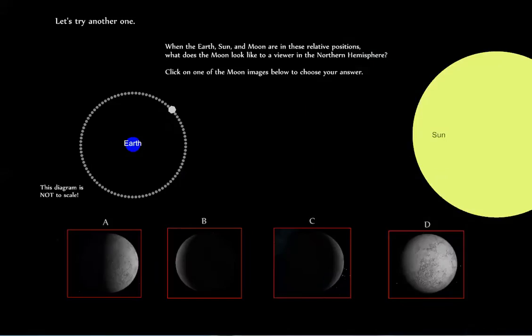Let's try another one. When the Earth, Sun, and Moon are in these relative positions, what does the moon look like to a viewer in the Northern Hemisphere? Click on one of the moon images below to choose your answer.